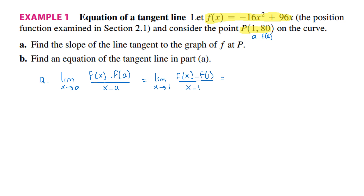Now we can substitute f of x by the expression highlighted at the top. We are finding the limit as x goes to 1 of minus 16x squared plus 96x minus f of 1. And f of 1 here is 80 — we can get it from the point — divided by x minus 1.